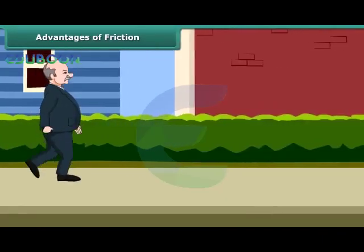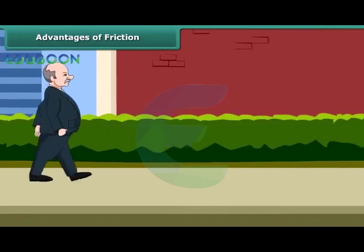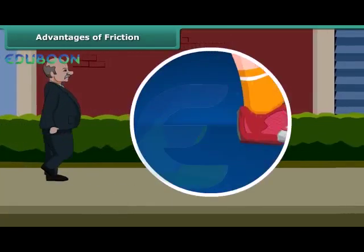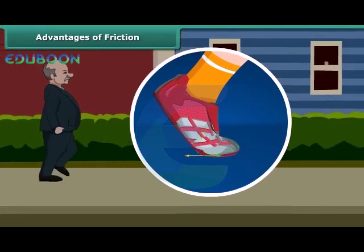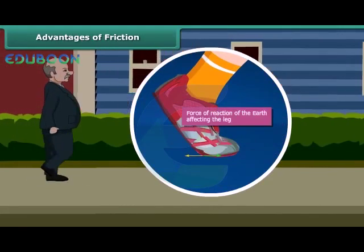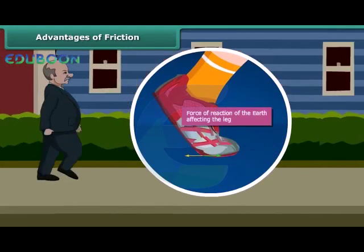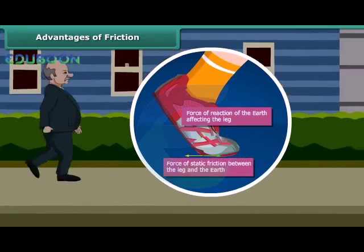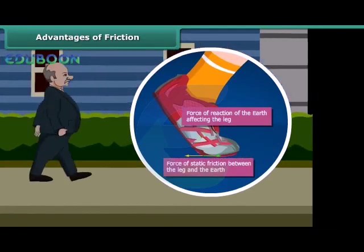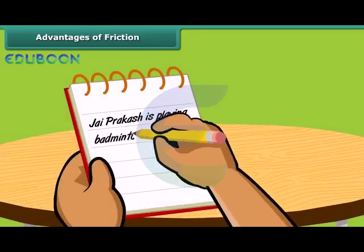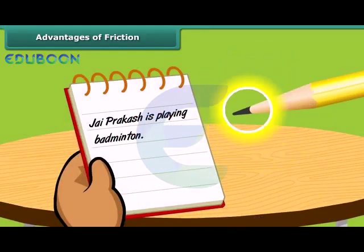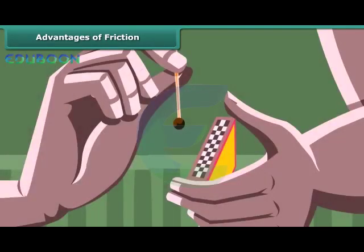Friction is both good and bad. We are able to walk because friction prevents us from slipping. When we push the ground with our foot, friction provides a forward reaction and pushes us forward. We are able to write because there is friction between the tip of the pencil and the paper. Lighting a matchstick is another useful application of friction.